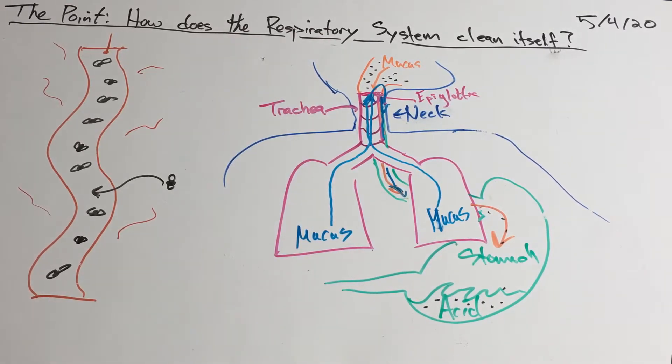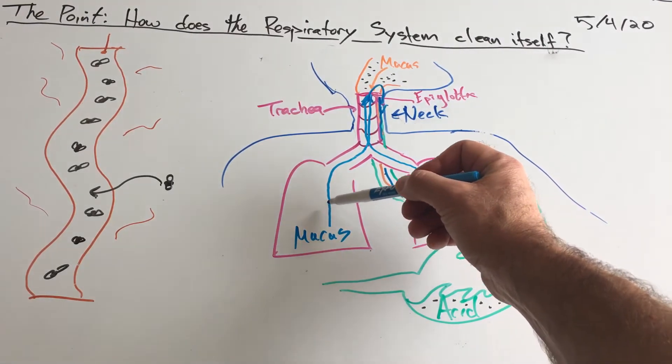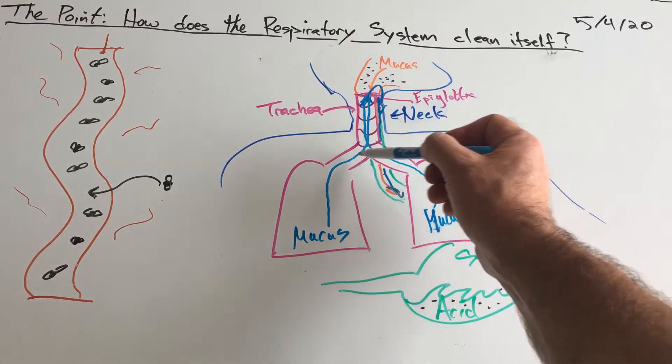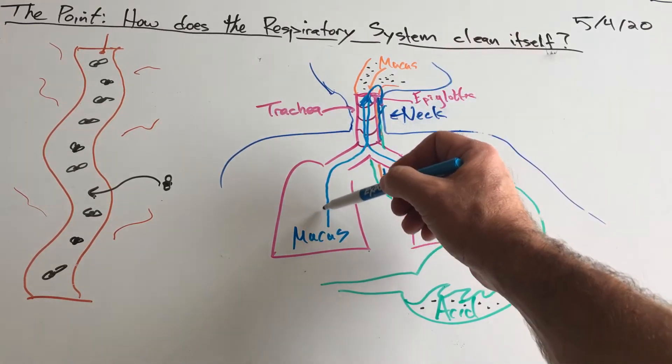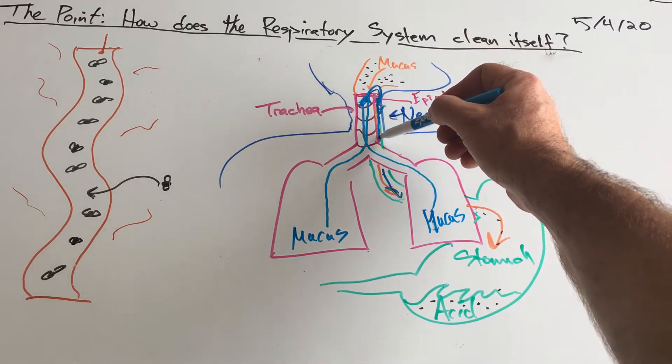The mucus that's in your lungs, bronchioles, bronchi, and trachea all goes up to the epiglottis where it makes a U-turn, and it too gets pushed down into your stomach where it drops all its terrible pollutants.